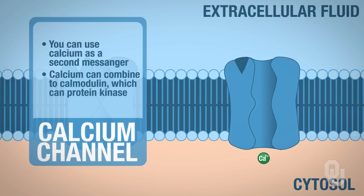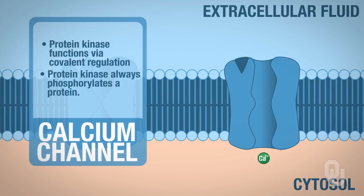Calcium then can combine to something called calmodulin, which can activate an enzyme called protein kinase. And we might as well go ahead and remind you that protein kinase functions via covalent regulation. It's an enzyme and covalently regulates. And so what protein kinase always does is it always phosphorylates a protein. And then you get some sort of response inside of the cell.